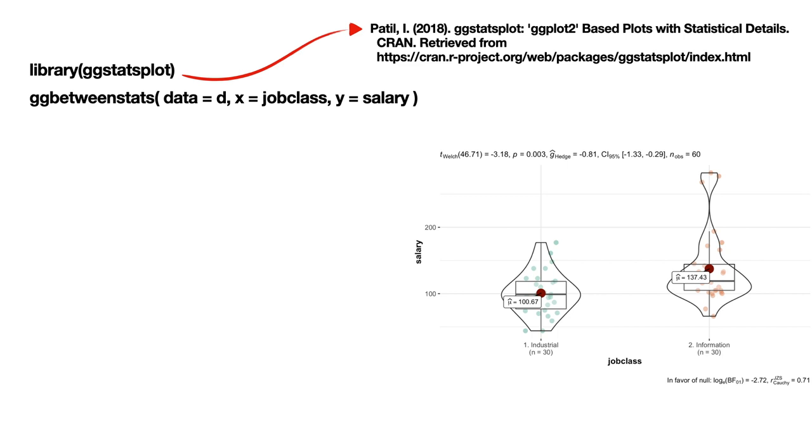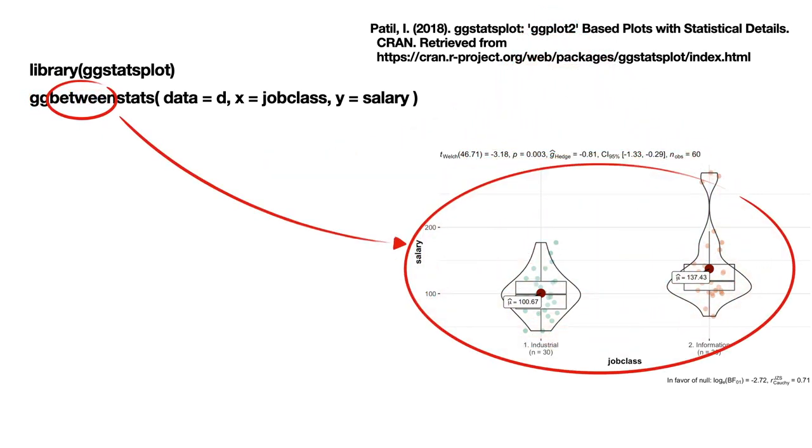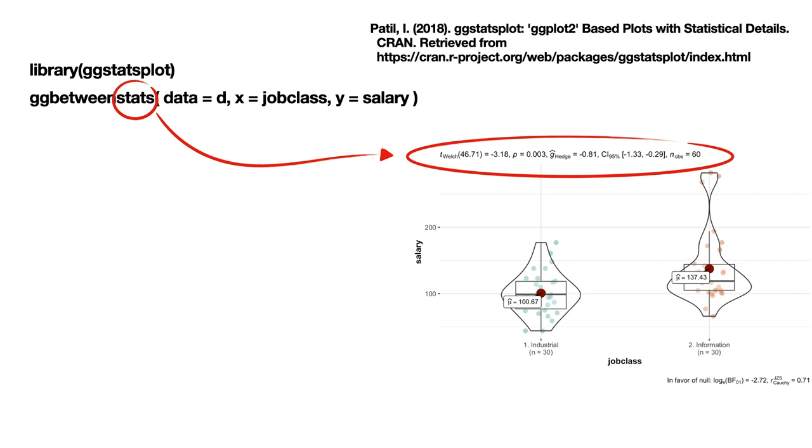The ggStatsPlot library was created by Mr. Patil and is one of my absolute favourite packages, which I use every day. This library is based on the famous and probably the most powerful data visualization library out there, ggPlot2. This explains the gg part of the function. The between part measures the similarity between independent samples, and the stats part is kind of self-explanatory. So, you see that by adding statistical details, Mr. Patil took already useful ggPlot2 visualization to a whole new level. Needless to say,